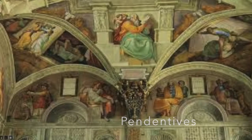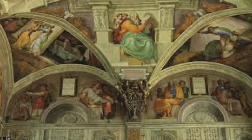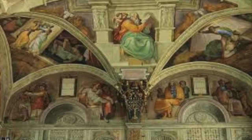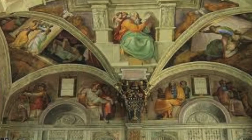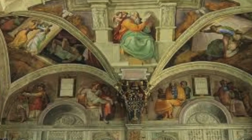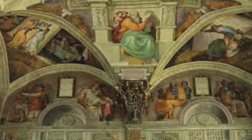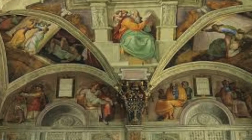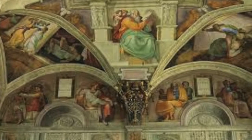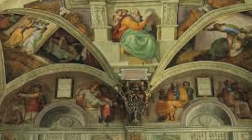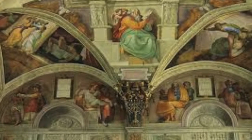There are four pendentives on the corners of the ceiling. They include scenes from Judith and Holofernes, David and Goliath, the Punishment of Haman, and the Brazen Serpent.